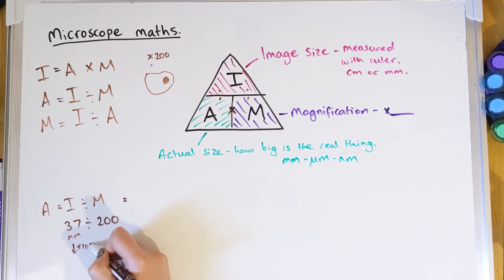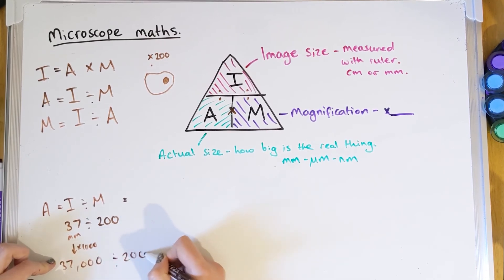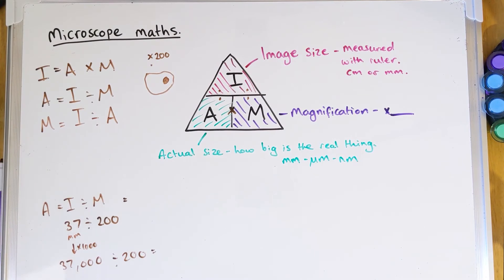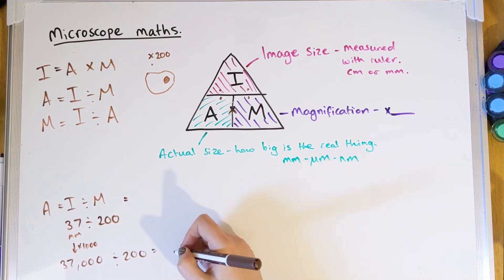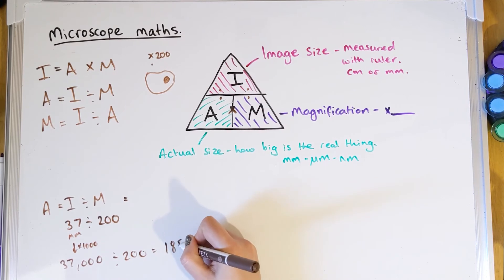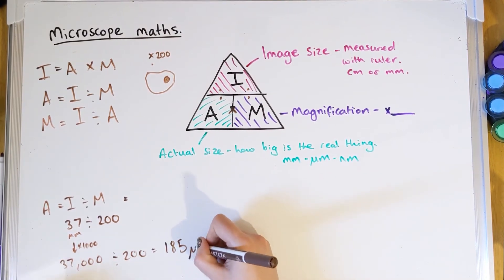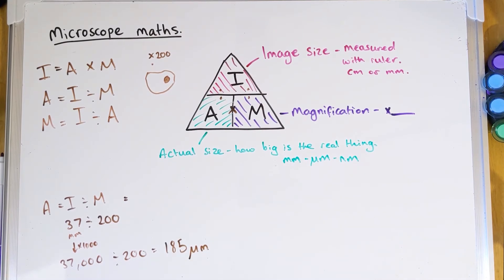37,000 divided by 200 gives 185. Because we converted millimetres into micrometres, the units of our answer are micrometres. So the actual size of that cell is 185 micrometres.